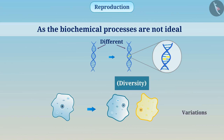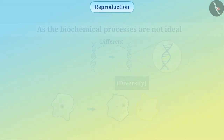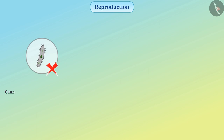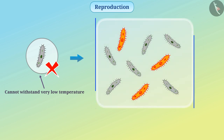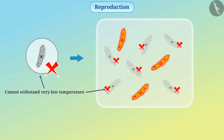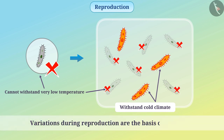Often, some variations are helpful for the protection of the species. For example, suppose there is a bacterium which cannot withstand very low temperature. During reproduction, it produces some bacteria which can tolerate very low temperature. If the climate becomes colder, many bacteria will vanish. However, those which can withstand cold climate help the species to survive. This is how variations are helpful for the survival of species.